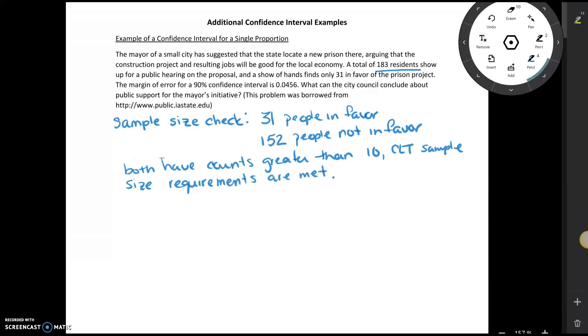Next, to calculate our confidence interval, we know from the notes that the formula for a confidence interval is always going to be the statistic plus or minus the margin of error. So we first need to find our statistic.